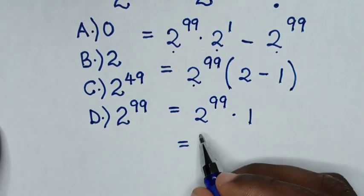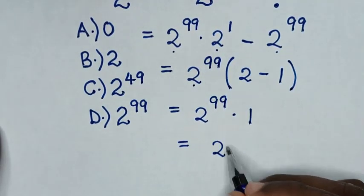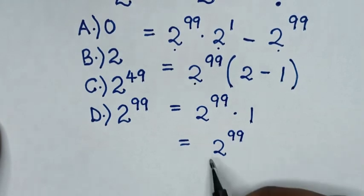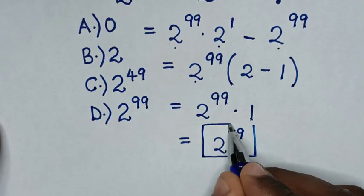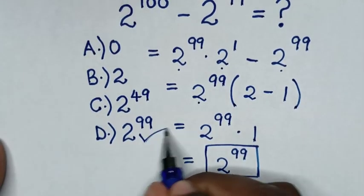Then it will be equal to 2^99 times 1 is 2^99. Therefore, this is our final answer. To select in the multiple choice, it is D.